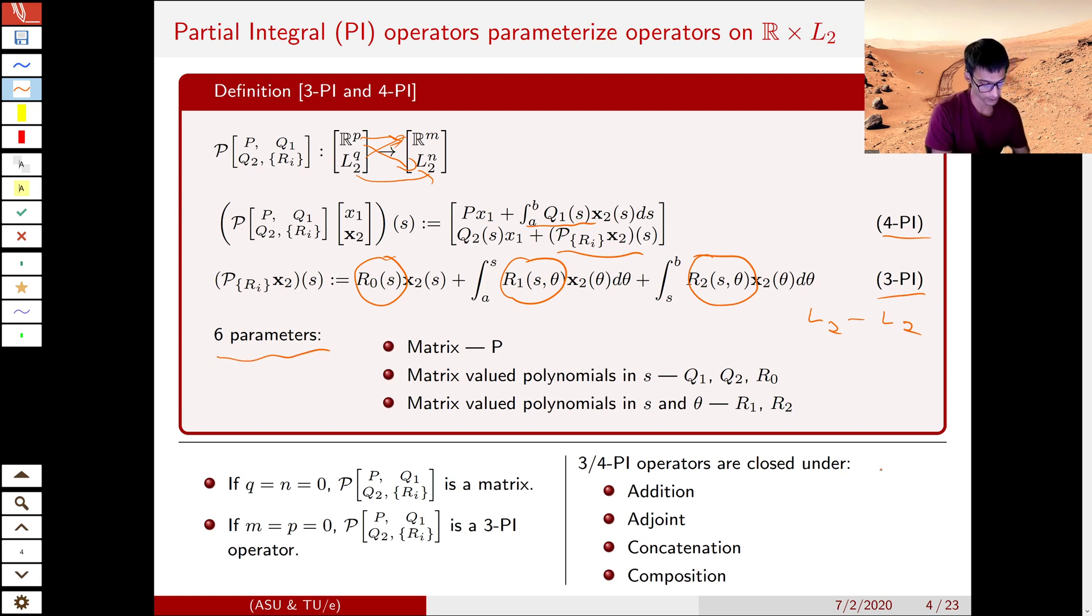These PI operators are similar to matrices in more than one ways. First of all, you can write a matrix as a PI operator. Second, PI operators are closed under addition, adjoint and composition. That means they form a star subalgebra or algebra, just like matrices do.